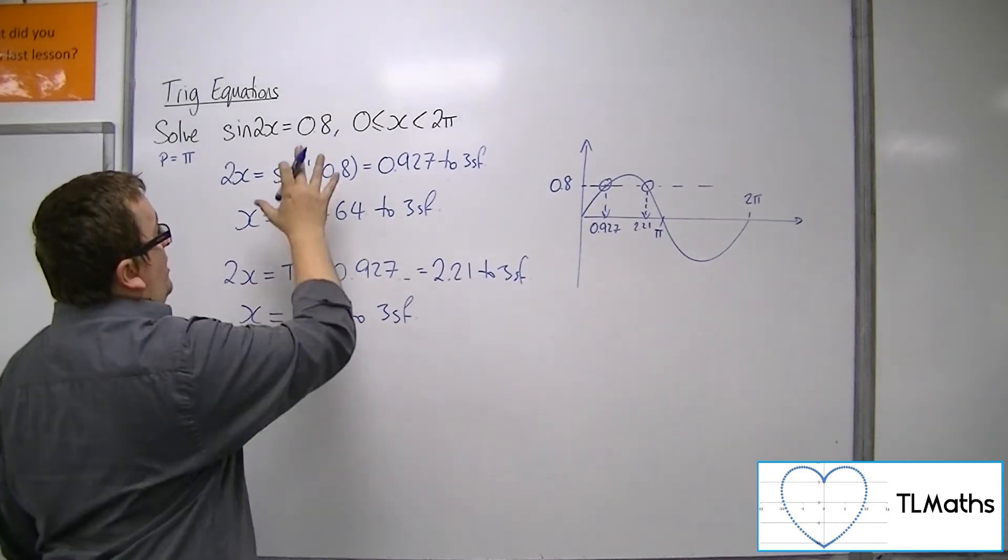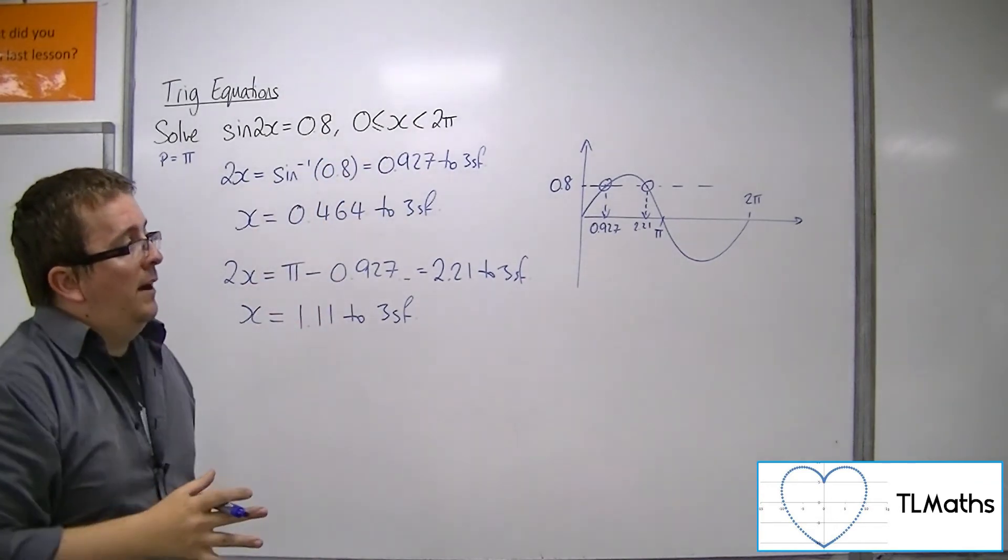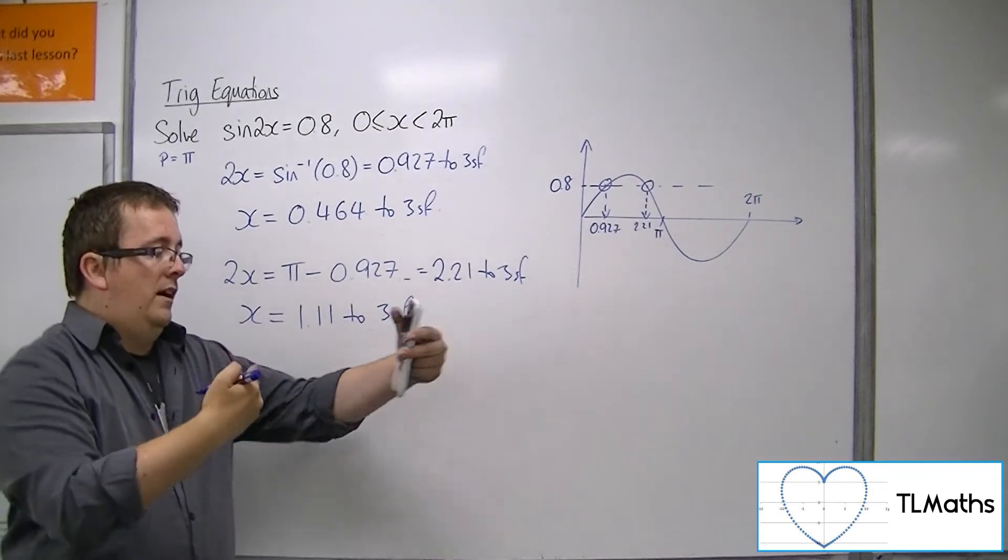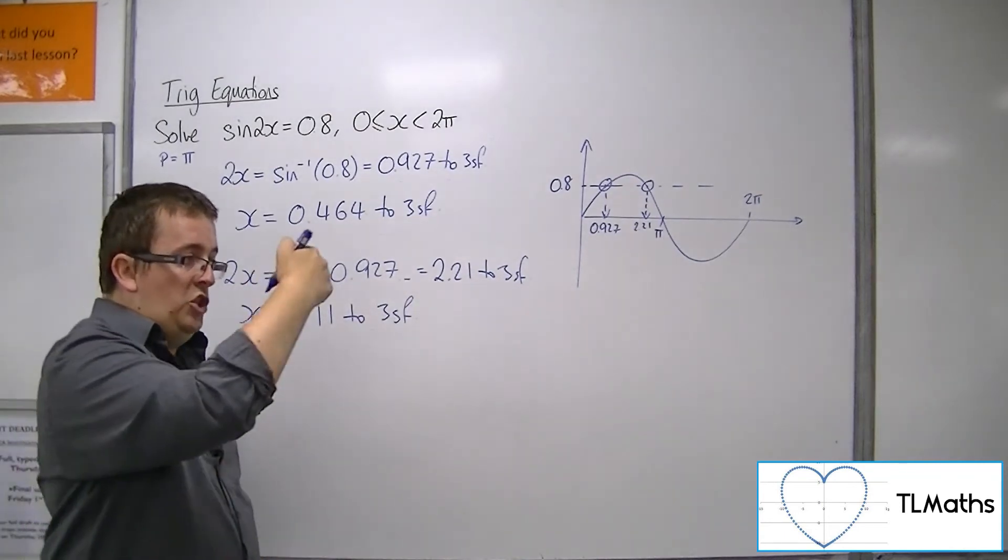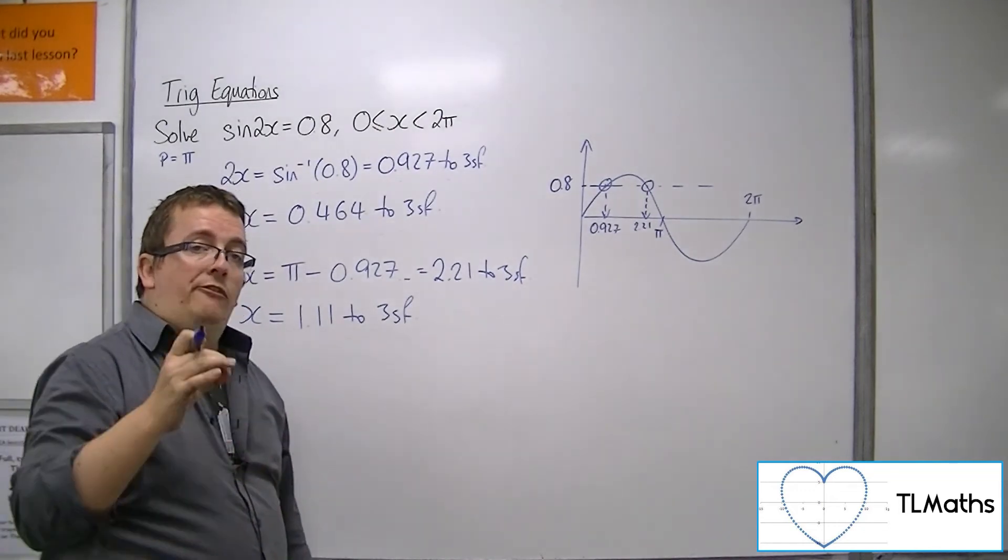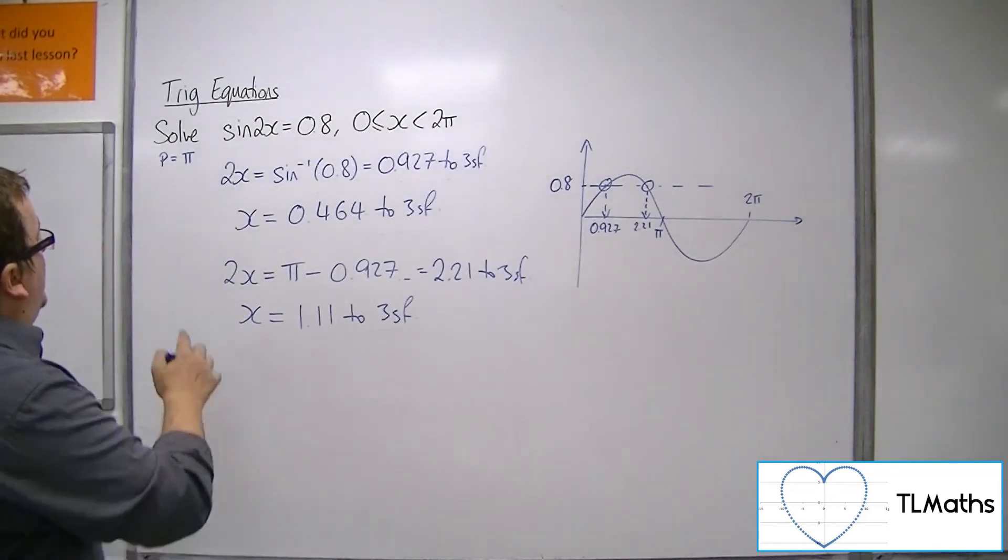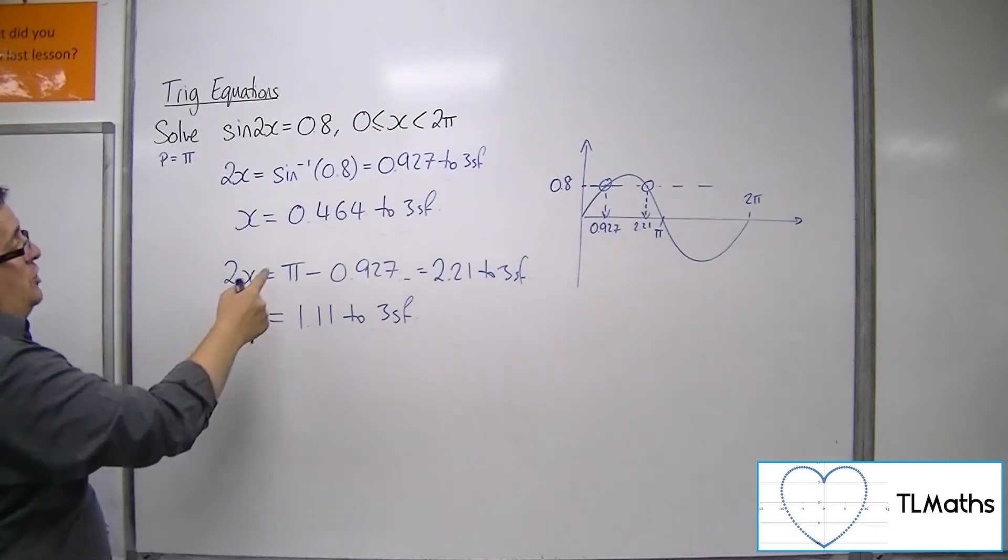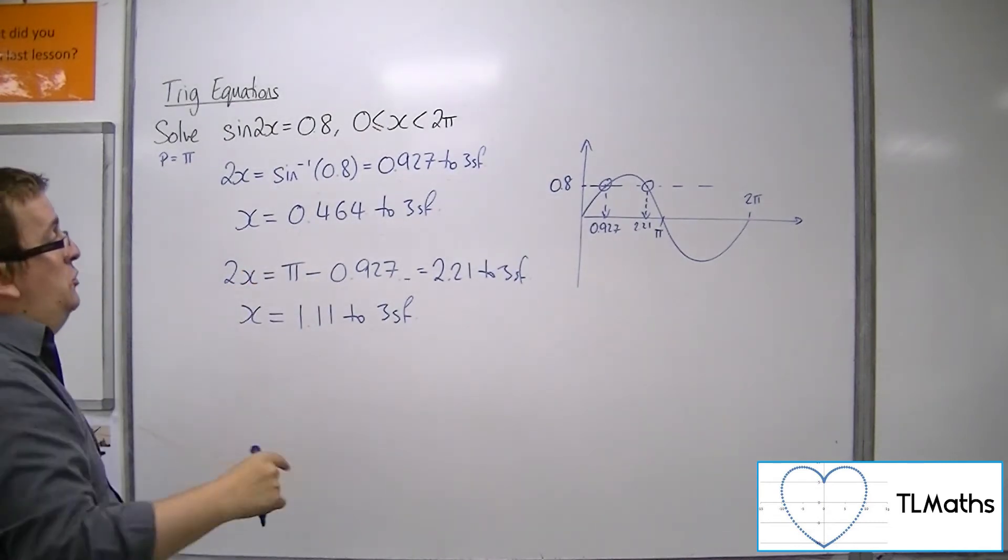Now these are two solutions to the problem, but because we have halved the curve, we can effectively get two of those sine curves between 0 and 2π. So we're actually expecting four solutions. I can add the period of the function to both of these to get two more solutions.